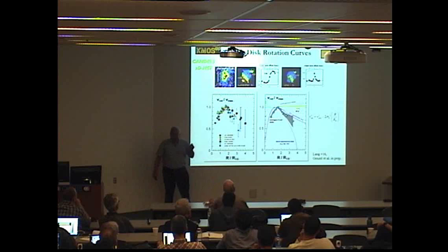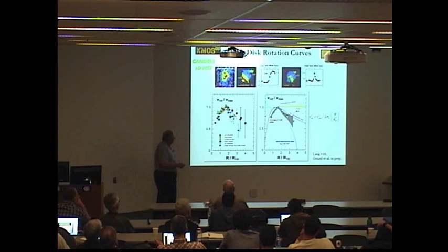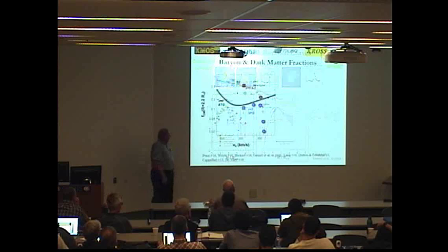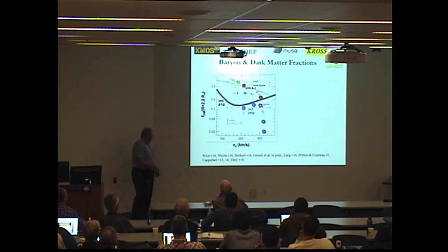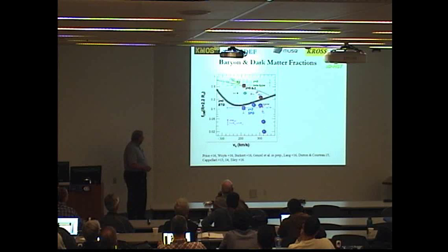But even if you correct for it, you still have actually fairly little space for dark matter. And that's summarized now in this fairly complicated plot. I apologize, I don't have that much time. Where we write down the dark matter fraction at the typical radius of R1 half or a little above R1 half, as most people are doing it, for instance in the Dutton-Goncourt paper. And that's where in fact that plot is taken from, as a function of VC.